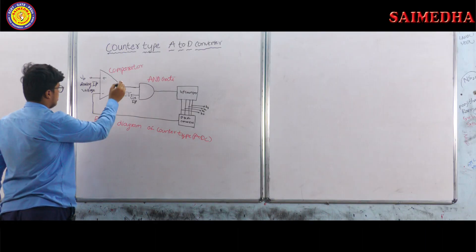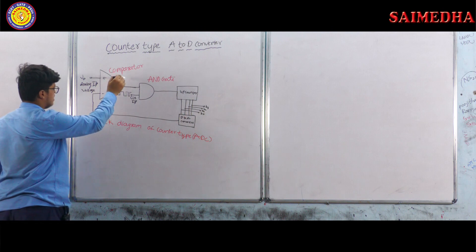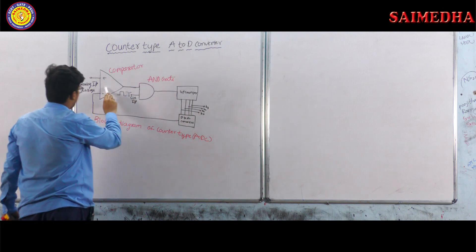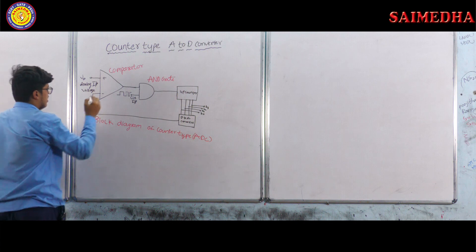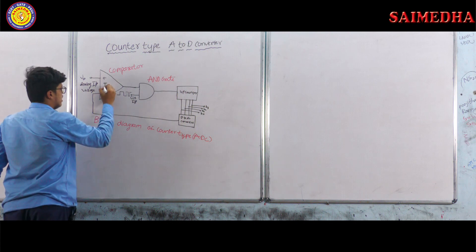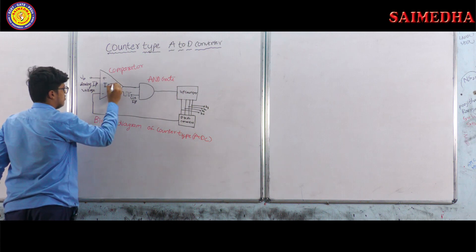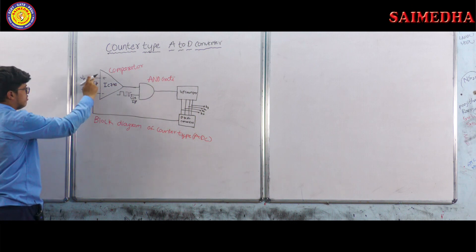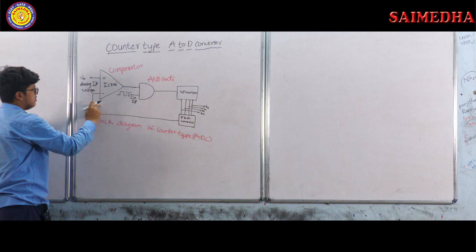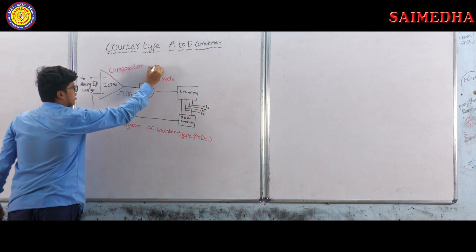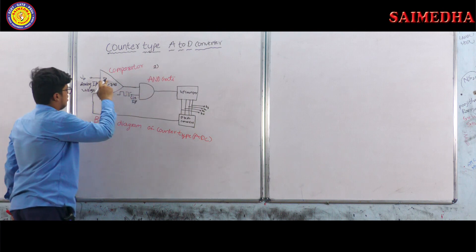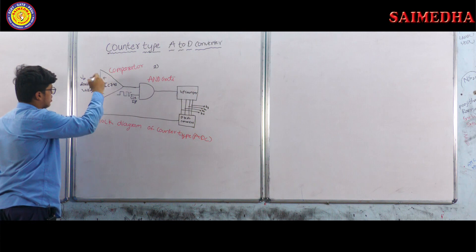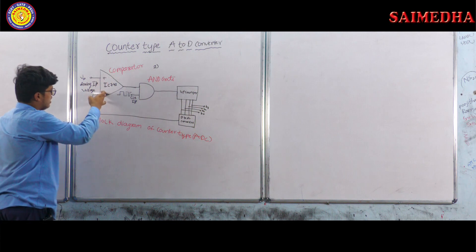Today's topic is counter type A to D converter. In the counter type A to D converter, the circuit consists of four blocks. The first block is an op-amp, IC number IC741, and in open loop configuration it works as a comparator, which gives logic one if the non-inverting terminal input is higher than the inverting terminal.